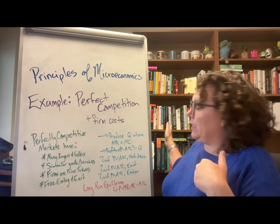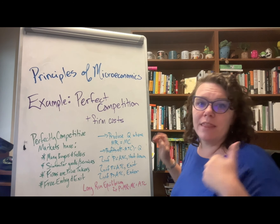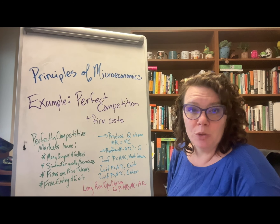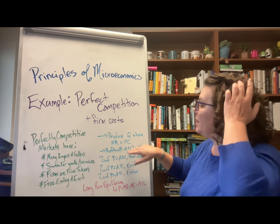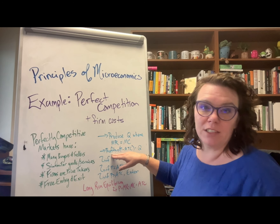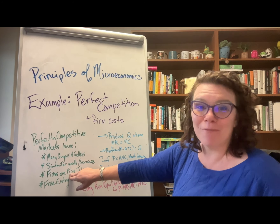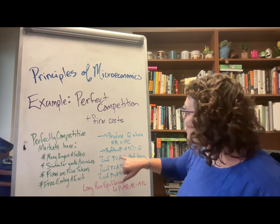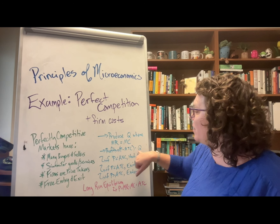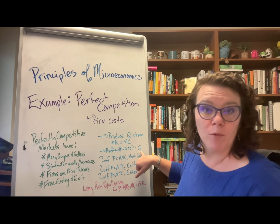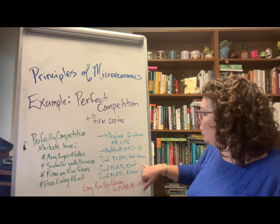The big ideas we want to remember and practice in this assignment: first, a profit-maximizing firm is going to produce the quantity where marginal revenue is equal to marginal cost. We can then use that to find profits. The marginal cost curve is also the price curve because firms are price takers, so we find profits by looking at price minus average total cost, multiplied by the equilibrium quantity.